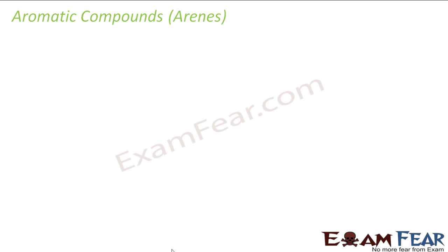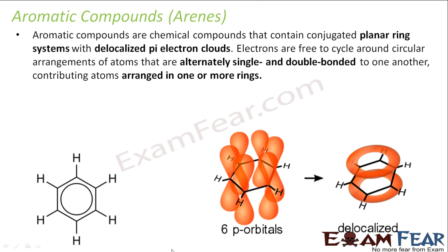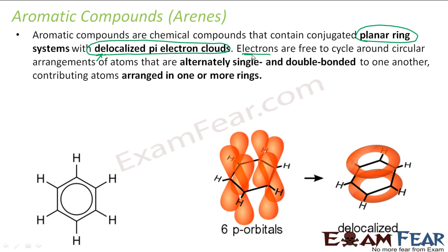Aromatic compounds are compounds that contain a conjugated planar ring. They have a planar ring and delocalized pi electron clouds. These electrons are free to cycle around, and the compounds have alternating single and double bonds.